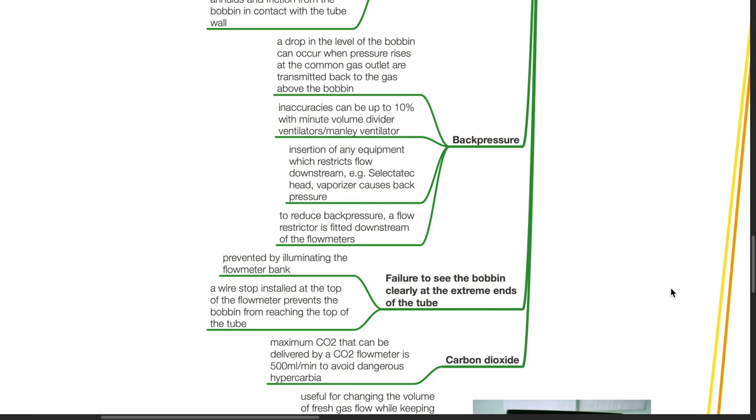Insertion of any equipment which restricts flow downstream such as the Selectatec head or vaporizer causing back pressure. To reduce back pressure, a flow restrictor is fitted downstream of the flow meters.